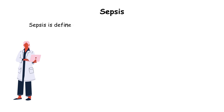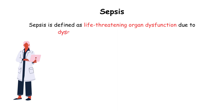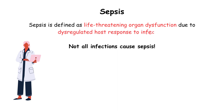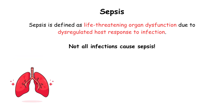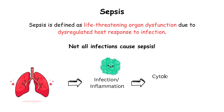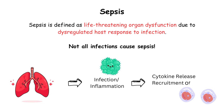The definition of sepsis is life-threatening organ dysfunction due to dysregulated host response to an infection. Not all infections cause sepsis. This immune response is normally present in all infections and inflammatory reactions. Here you can see cytokine release and recruitment of immune cells.